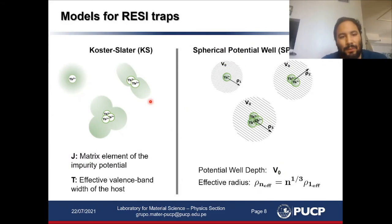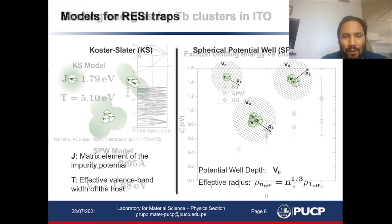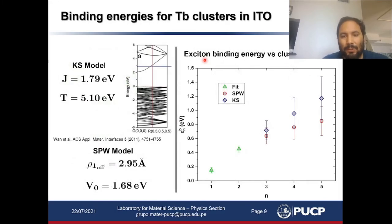So there are two models to treat these rare earth isoelectronic traps: one is the Koster-Slater model and the other one is the spherical potential well model. We have used these two models and the activation energies we obtained earlier to calculate and predict other binding energies, assuming that these activation energies are actually the binding energies of these excitons to these rare earth isoelectronic traps. Unfortunately, we were able only to measure two activation energies, and from them we calculate the binding energies for clusters of larger sizes. Our results suggest the results obtained from both models, Koster-Slater and spherical potential, are in agreement to what we actually could expect from this material.